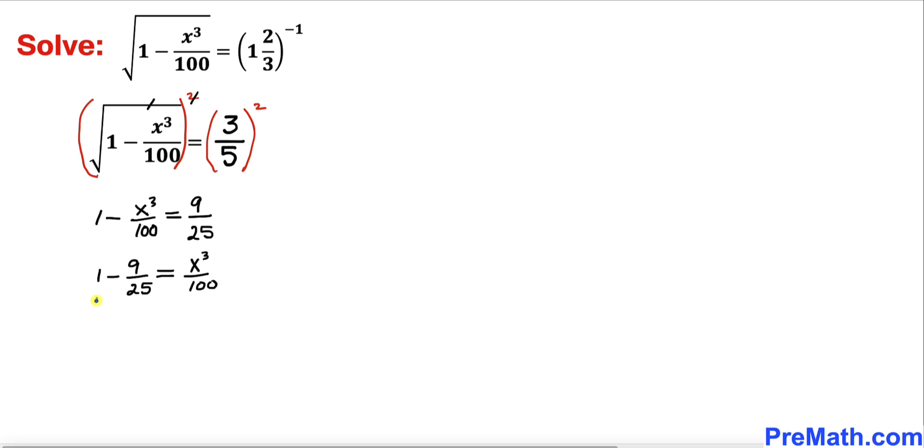Let's focus on the left hand side. If we simplify this we are going to get 16 divided by 25. So the left hand side simplifies to 16 divided by 25 equals x cubed divided by 100.